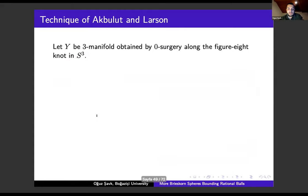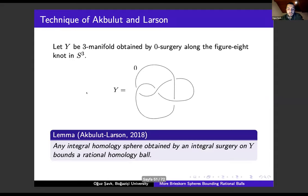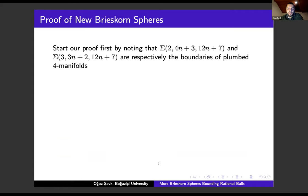I will describe what it is. For us, let Y denote the three-manifold obtained by zero surgery on the figure-eight knot in the three-dimensional sphere, as in the picture. Zero denotes zero surgery, and the knot is the figure-eight knot. Akbulut and Larson first observed that if you do one more integral surgery on Y and get a three-manifold, if your three-manifold is further an integral sphere, then it must bound a rational ball.